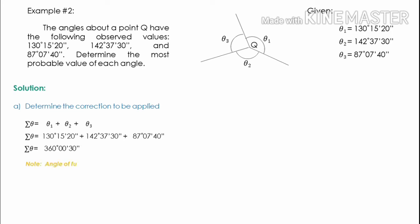However, we know that the angle of a full circle is 360 degrees. Subtracting 360°0'30" from 360°, we have a discrepancy in the observation of negative 30 seconds. Therefore, the correction to be subtracted from each observed angle equals the discrepancy divided by the number of observations made, which is 3. The correction is negative 30 seconds divided by 3, giving us negative 10 seconds.